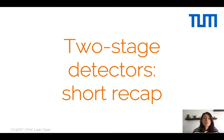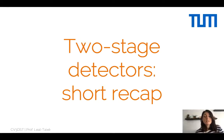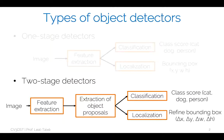Welcome to the second lecture on object detection from the CB3DST series. We'll start with a short recap on two-stage detectors from the last lecture. We have mainly two categories for object detectors based on machine learning and deep learning, and in the last lecture we saw two-stage detectors.